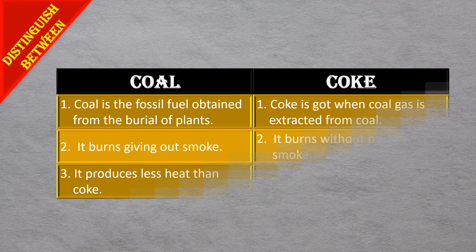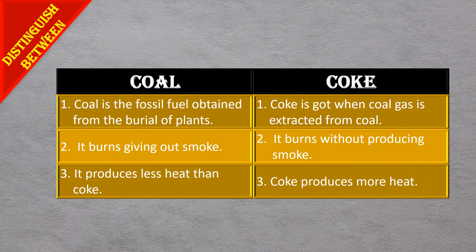Comparing coal and coke: coal is a fossil fuel obtained from the burial of plants, whereas coke is obtained when coal gas is extracted from coal. Coal burns giving out smoke, whereas coke does not produce smoke when burnt. Coal produces less heat than coke, and coke produces more heat.